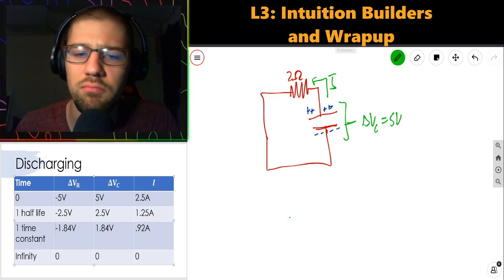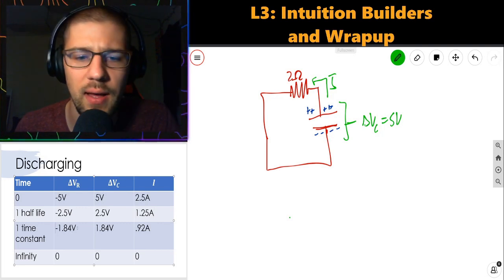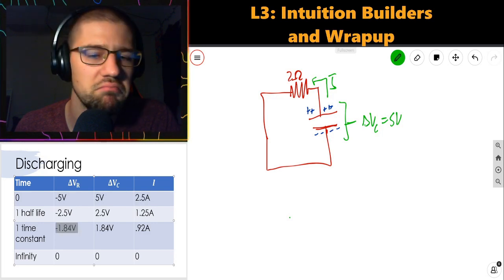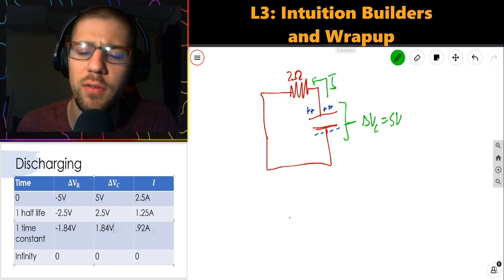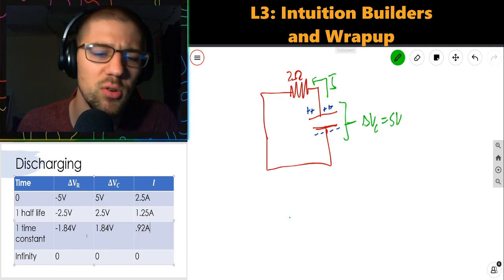At one time constant, same kind of deal. The resistor eats all of the voltage that the capacitor supplies, a lower value, 1.84 volts. And we have 0.92 amps remaining.